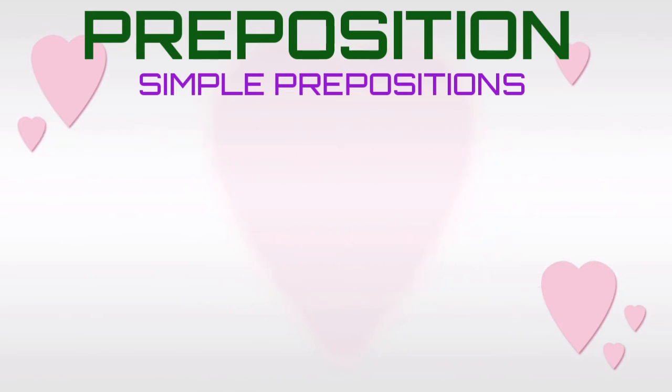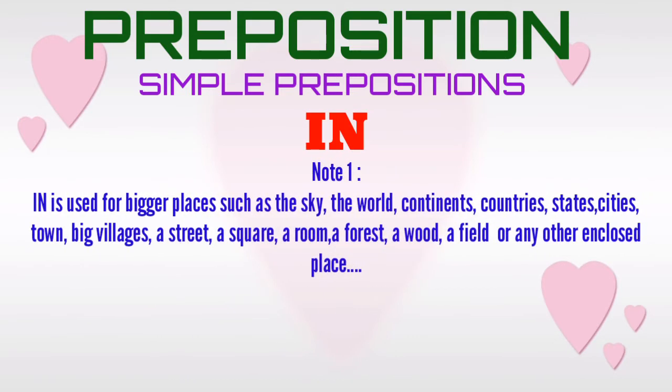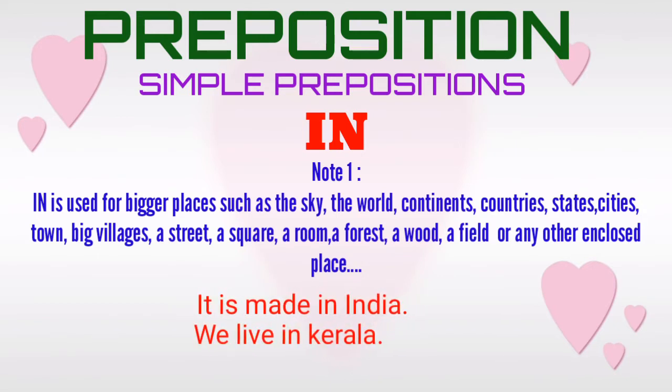Simple preposition 'in', note one. The simple preposition 'in' is used for bigger places such as the sky, the world, continents, countries, states, cities, towns, big villages, a street, a square, a room, a forest, a wood, a field, or any other enclosed place. For example: 'It is made in India.' 'We live in Kerala.'